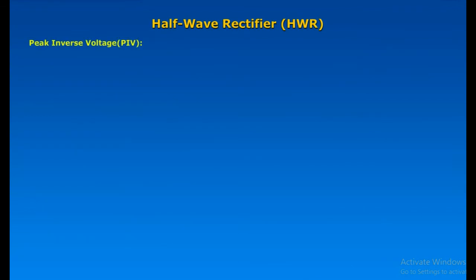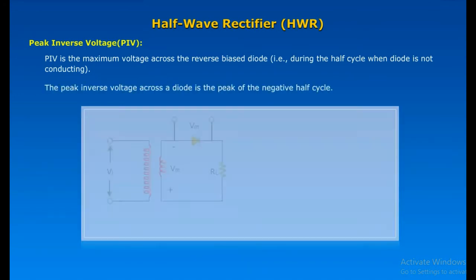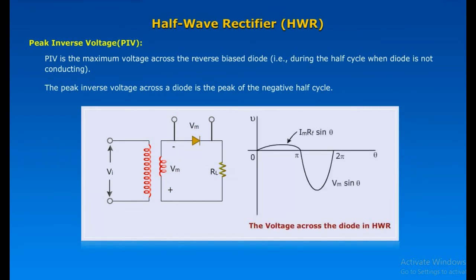Half-Wave Rectifier Peak Inverse Voltage (PIV): PIV is the maximum voltage across the reverse-biased diode, i.e., during the half-cycle when the diode is not conducting. The peak inverse voltage across the diode is the peak of the negative half-cycle. In the half-wave rectifier, peak inverse voltage equals Vm volts.